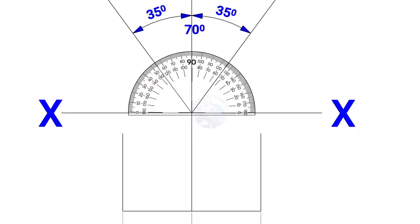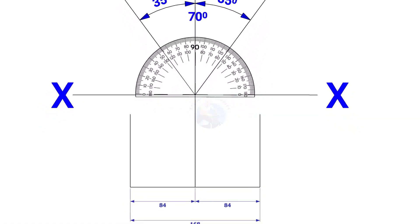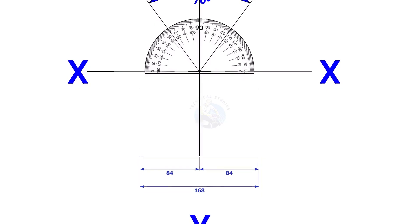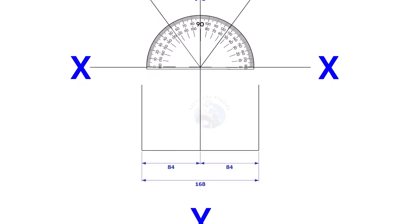Mark 84 millimeters each on both sides of the YY axis, that is the outside diameter of the header. Draw perpendicular lines on these marks, as shown.